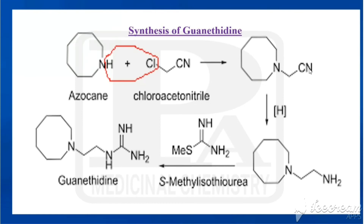Next, we add S-methyl isothiourea (also called S-methyl pseudothiourea), whose formula is CH3S-C(=NH)-NH2. By this addition, one hydrogen from the NH2 combines with the S-CH3 group and is removed as CH3SH (methyl mercaptan). The remaining carbon then connects with the NH, and we obtain guanethidine.